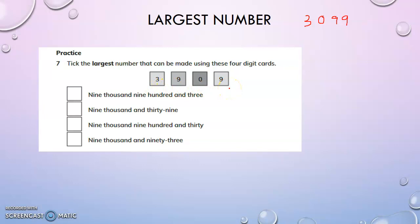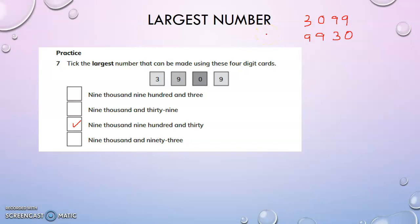To find the largest number, arrange in descending order: nine, nine, three, zero — giving nine thousand nine hundred and thirty. So this is the largest number that can be made using these four digit cards. Finding the largest and smallest numbers with a given set of number cards — we have done this in class two.